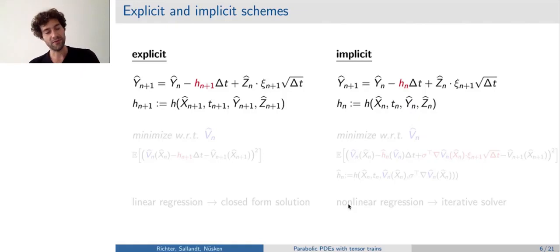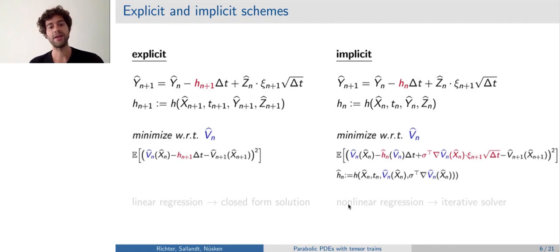And still, the question remains how we actually can solve for the y_n plus one terms. And it turns out that they both can be written down as a minimization task, where we minimize with respect to this function v_n hat. And I wrote down the two objectives here. On the left-hand side, you can see it for the explicit scheme. And the right-hand side looks a little bit more complicated. I highlighted again the differences in red. Essentially, we see that instead of this h_n plus one, we have this h hat_n, which crucially now depends on the quantity with respect to which we want to minimize, this v_n hat.